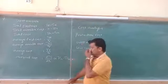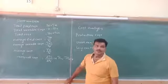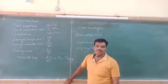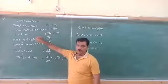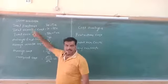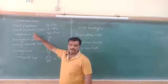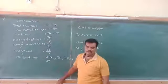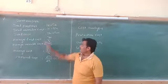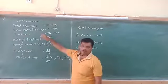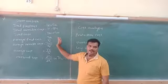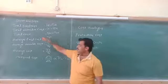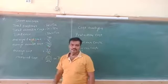Another type is Total Cost. Total Cost is the sum of fixed cost and variable cost. By adding Total Fixed Cost and Total Variable Cost we get Total Cost. That means: TC = TFC + TVC.